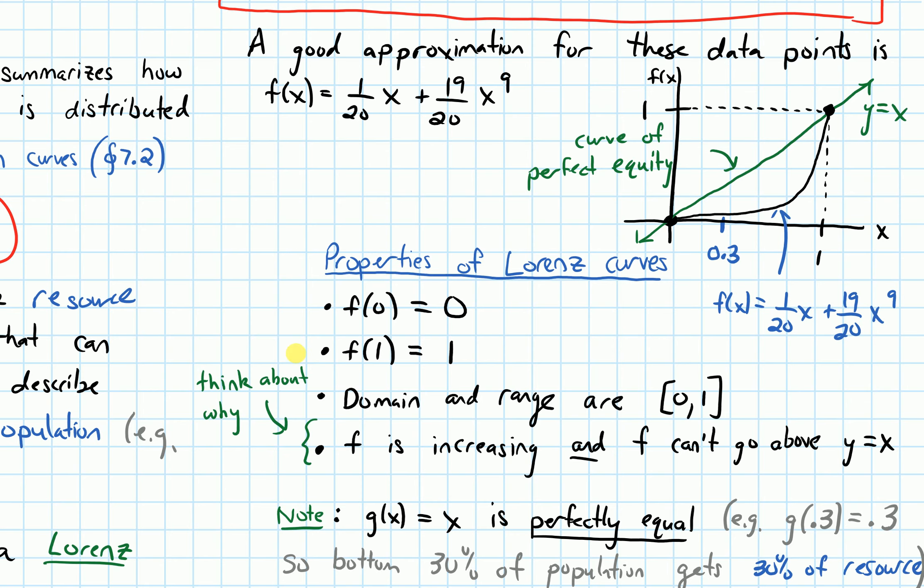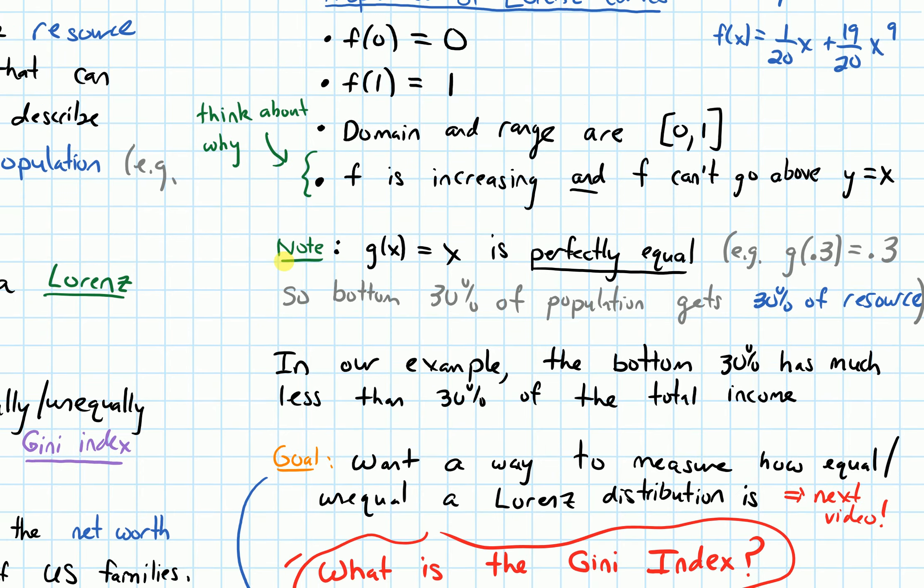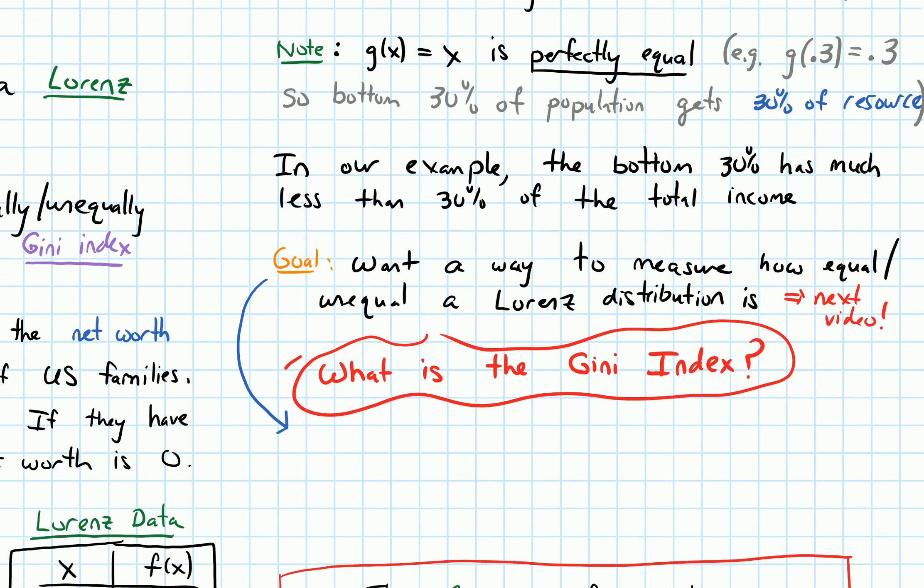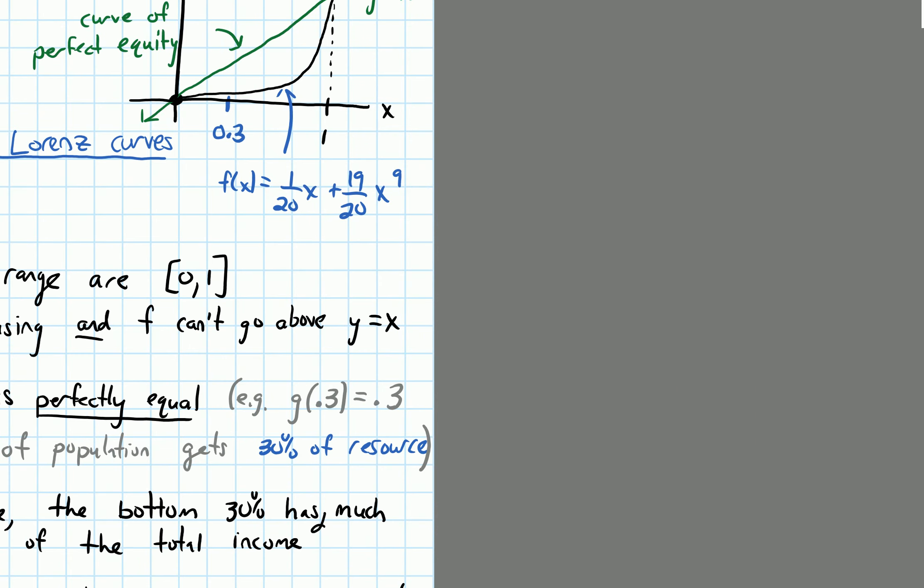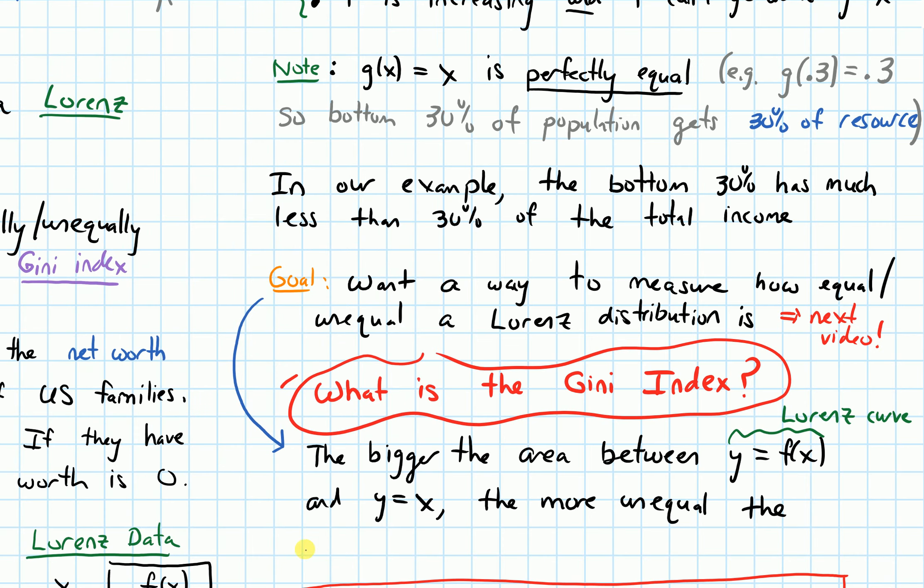So here's what we're going to do. What we can notice is that the bigger the area between those two curves above—between y equals f(x) and y equals x, this is the Lorenz curve and y equals x, which is the curve of perfect equity—the more unequal the distribution.